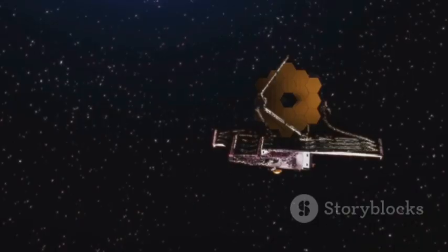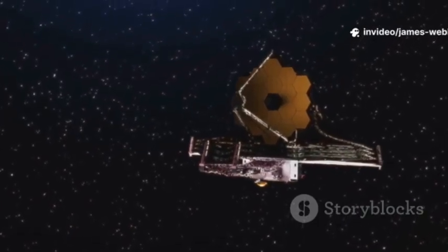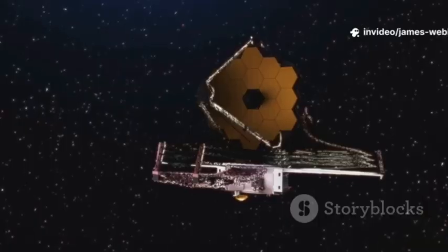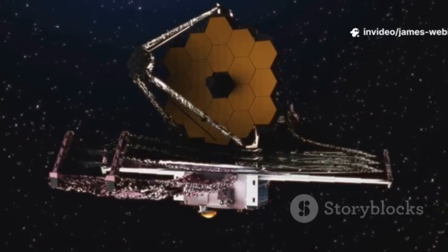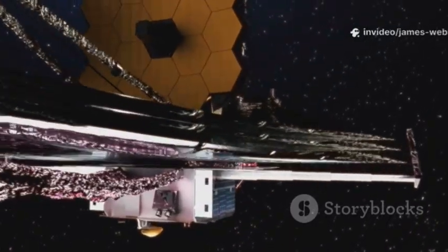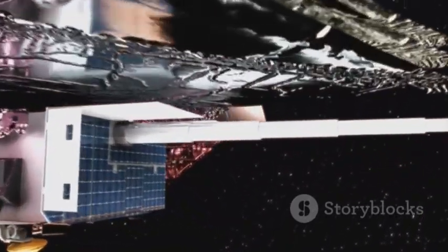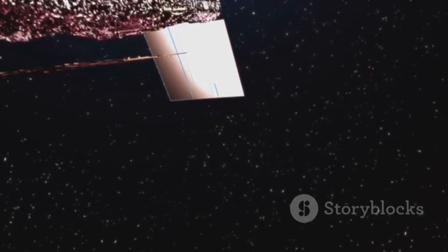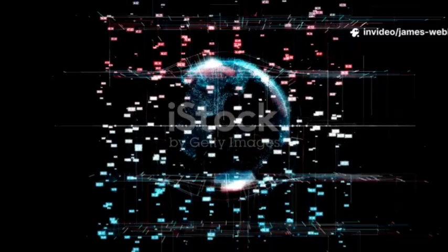Positioned a million miles from Earth, its massive golden mirrors are designed to capture the faintest whispers of light from the dawn of time. But now, this incredible instrument has turned its unparalleled gaze from the distant past to a visitor in our own time, right here in our solar system. What it found is nothing short of astonishing.